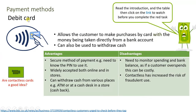The next payment method is the debit card, which allows customers to make purchases by card with money taken directly from their bank account, and can also be used to withdraw cash. Advantages include: it's a secure method as you need a PIN to use it; it's widely accepted online and in stores; and you can withdraw cash from an ATM (automated teller machine), a hole in the wall, or via cashback at a store cash desk.